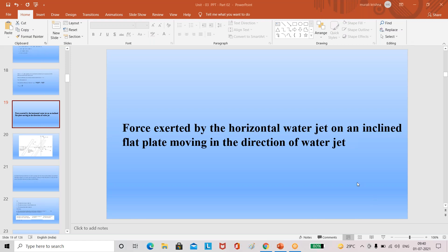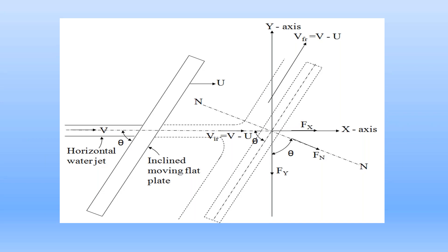Now everyone look at this picture on your cell phone screens. This is the diagram for this impact. The water jet is horizontal and the flat plate is in the inclined direction — not vertical. It is moving in the direction of the water jet, so the water jet and the inclined plate are both moving in the same direction. V is the absolute velocity of the water jet and U is the absolute velocity of the flat plate.